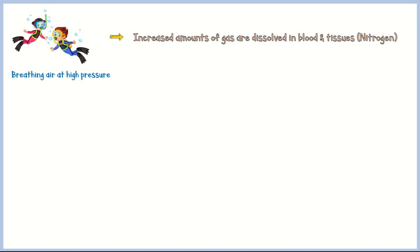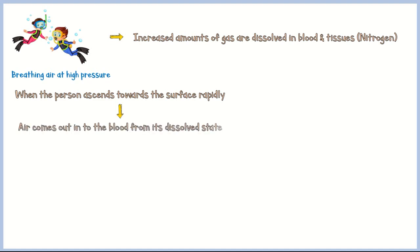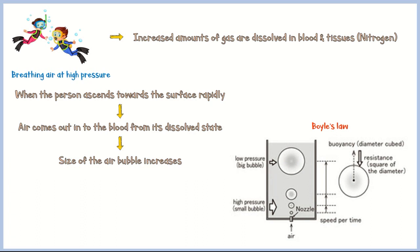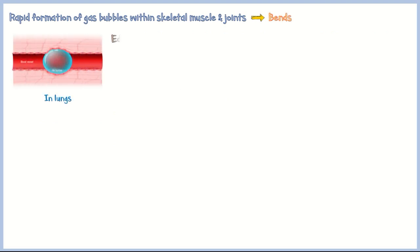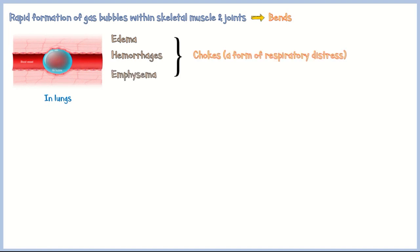When air is breathed at high pressure, such as in a deep sea dive, increased amounts of gas are dissolved in blood and tissues, particularly nitrogen. When the person ascends toward the surface rapidly, air comes out of solution into the blood and embolizes rapidly, and the size of the bubbles also increases as the person approaches the surface — recall Boyle's law from physics and chemistry. Rapid formation of gas bubbles within skeletal muscle and joints leads to a painful condition called bends. In the lungs, air embolism causes edema, hemorrhages, and emphysema, ultimately leading to a form of respiratory distress called chokes.